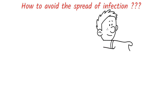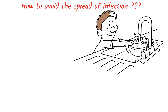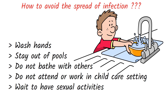People who are infected with crypto shed the parasite in their stool while they are having symptoms and for about 2 weeks after symptoms have stopped. To reduce the risk of spreading the illness, wash hands carefully and frequently with soap and water, stay out of pools, splash pads, and lakes while sick, do not swim for at least 2 weeks after diarrhea stops, do not bathe with others while sick, do not attend or work in a child care setting or preschool until 24 hours after diarrhea stops, and wait to have sexual activities until 2 weeks following the end of symptoms.